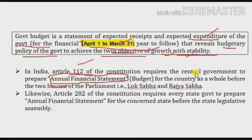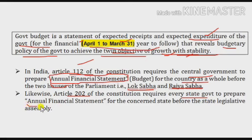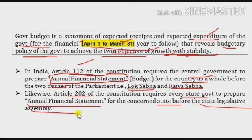So in Article 112, we have the central government budget, which the Finance Minister presents before the Parliament of India — that is, Lok Sabha and Rajya Sabha. Similarly, in Article 202 of the Constitution, we have the state budget — every state is required to prepare an annual financial statement for the concerned state and present it before the State Legislative Assembly. So these are the constitutional provisions regarding the central government budget in Article 112 and the state government budget in Article 202.